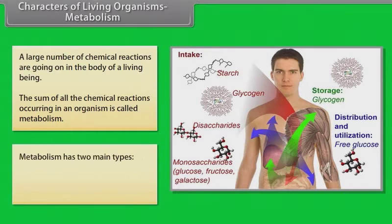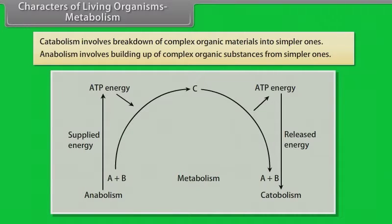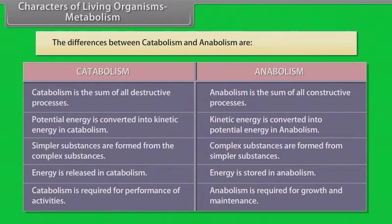Metabolism has two main types: catabolism and anabolism. Catabolism involves breakdown of complex organic materials into simpler ones. Anabolism involves building up of complex organic substances from simpler ones.